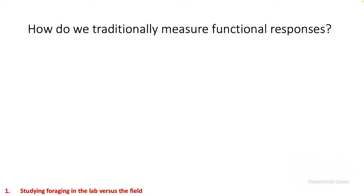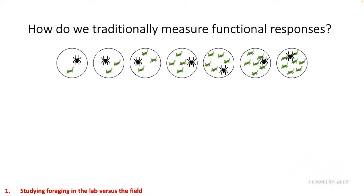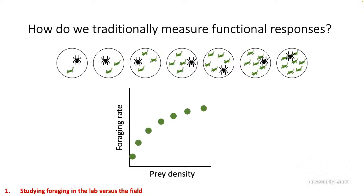Traditionally we measure functional responses by setting up replicate arenas, filling them with a certain number of prey across a range of prey densities, adding our predator, and then recording after a set amount of time how many prey have been eaten. This gives us our foraging rate, which we can plot against prey density and fit equations to get our functional response. We can repeat these experiments to test the effects of all sorts of variables on consumer-resource interaction strengths.